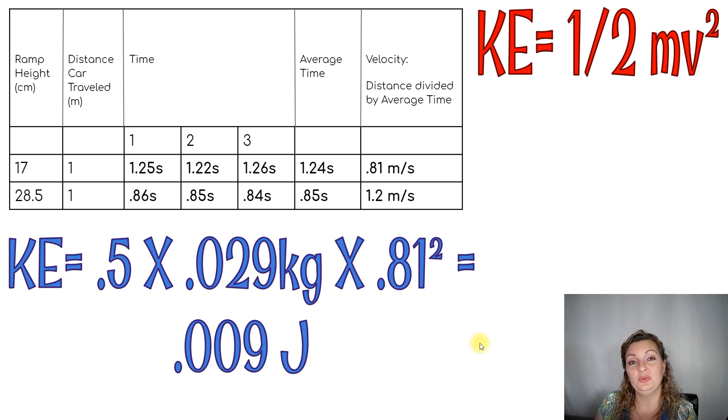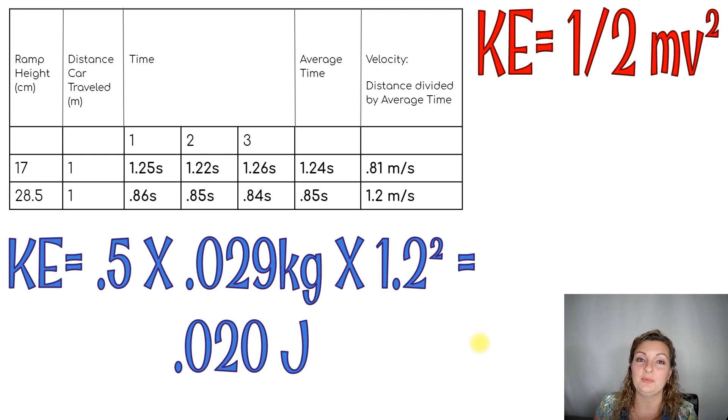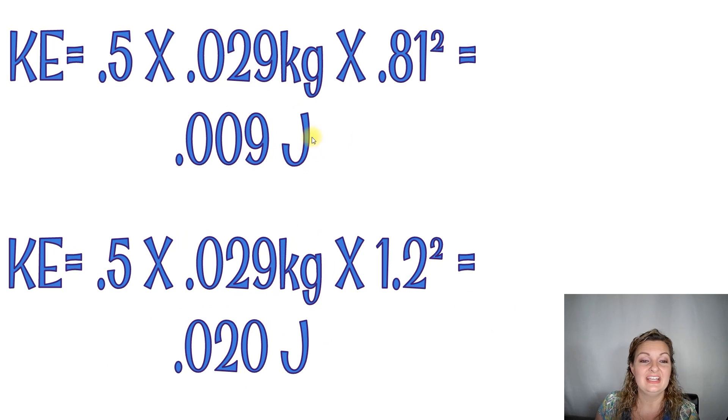So we're going to do this whole equation again, but for our second height. So the only number that we really have to change here is going to be our velocity because the half stays the same, our mass doesn't change, it's the same car, right? So the only thing that's changing is going to be our velocity. So 1.2 squared. Remember order of operations, we always do the squared first. So 1.2 squared goes first in our calculator, and then you can multiply the rest across and we end up getting 0.020 joules. Now, when we look at these two side by side, you can see the one that was much more shallow and hardly any of a ramp had a very low kinetic energy. But as we rose it up and it got higher and higher, you can see that we are increasing that kinetic energy.